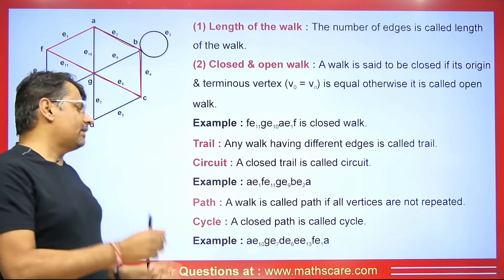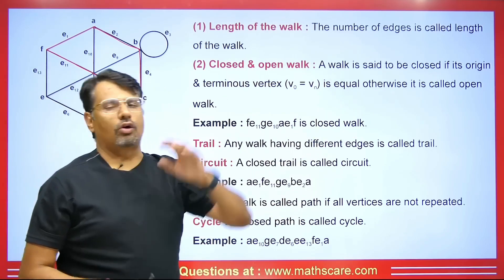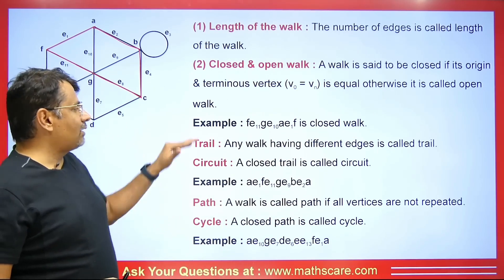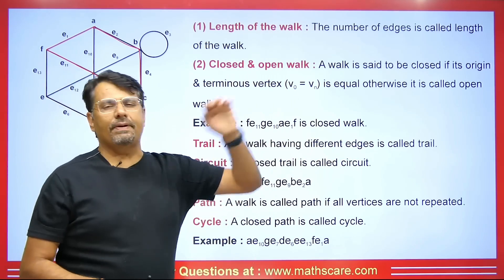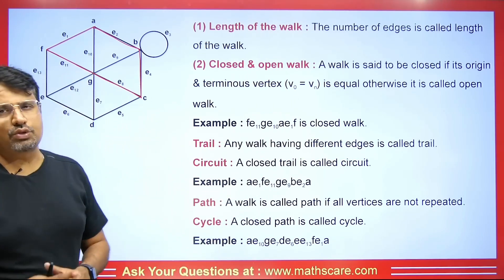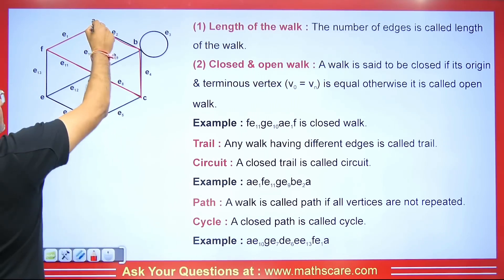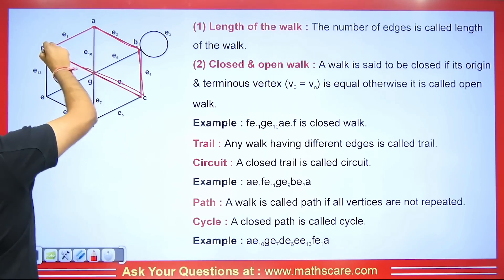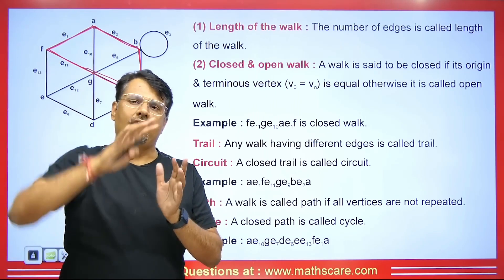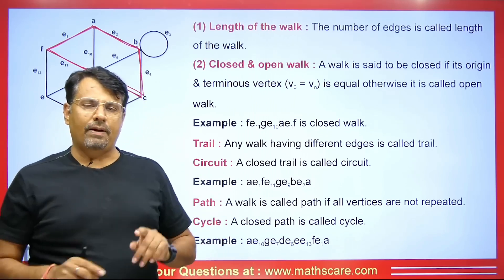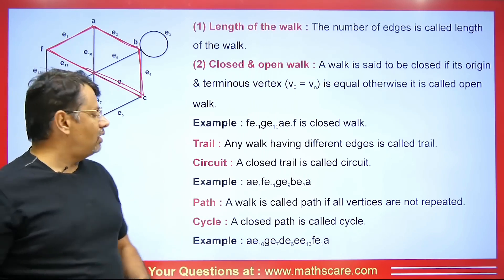Now we will talk about path. A walk is called a path if all vertices are not repeated. The difference between path and trail: in a trail the edges should not repeat, whereas in a path the vertices should not repeat. For example, starting here, going here, then here, then here, then back here — you might say vertex A repeats, but that is okay since it is just the starting and ending point. There should be no vertex repetition in the middle.